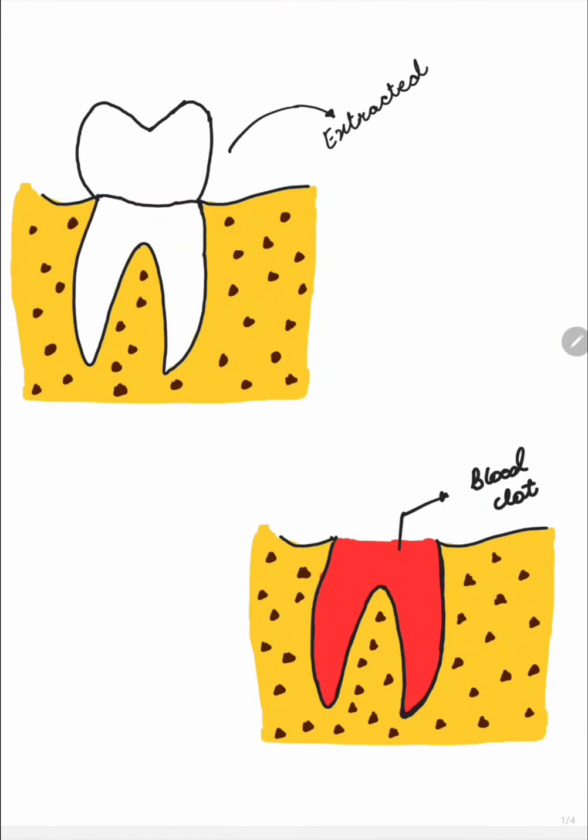Hey all, as we know that after extraction of any tooth, it will lead to the formation of blood clot in that empty socket. But what happens if that blood clot is lost or disintegrated? It leads to a complication which is known as dry socket.